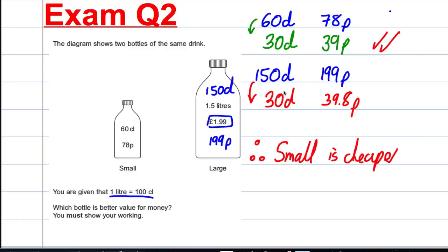Nice, easy way to do the comparisons there. Alternatively, what you could do if you really wanted to, you could double this. If you double this, it would be 3 litres and that would be £3.98. And you could multiply this by 5, in which case, you get 3 litres and 78 times 5 are £3.90. So again, this one's cheaper. Whichever way works for you is fine in this method, as long as you're comparing like with like.